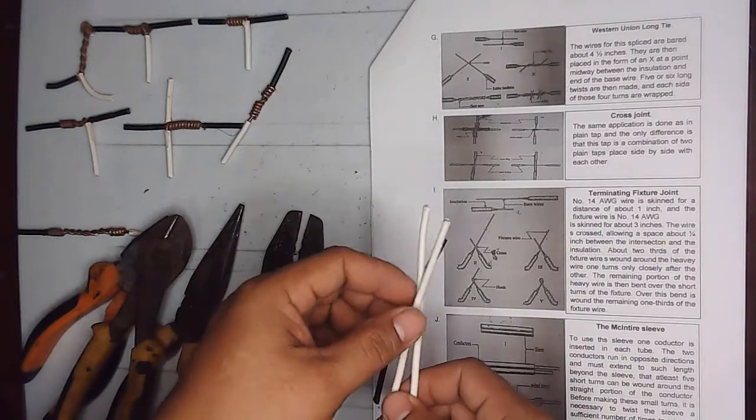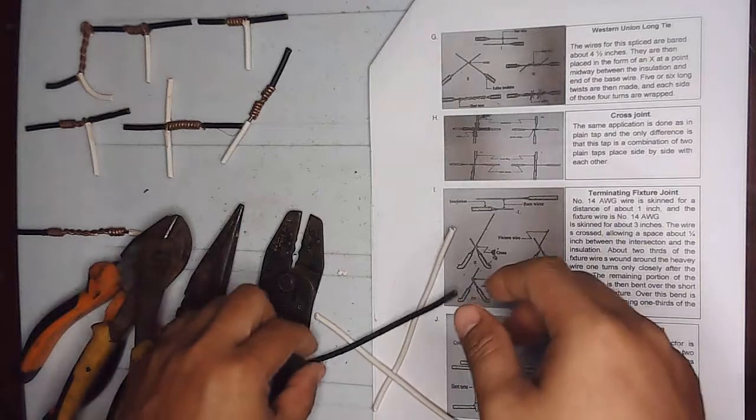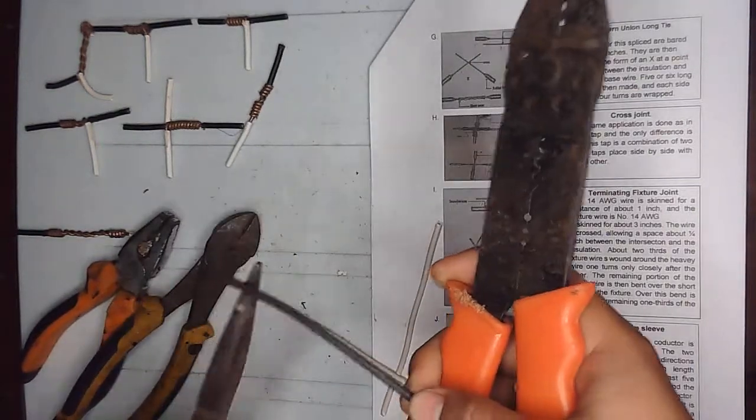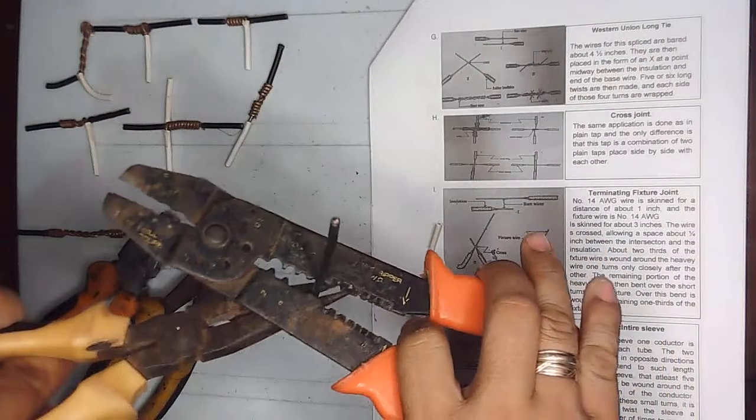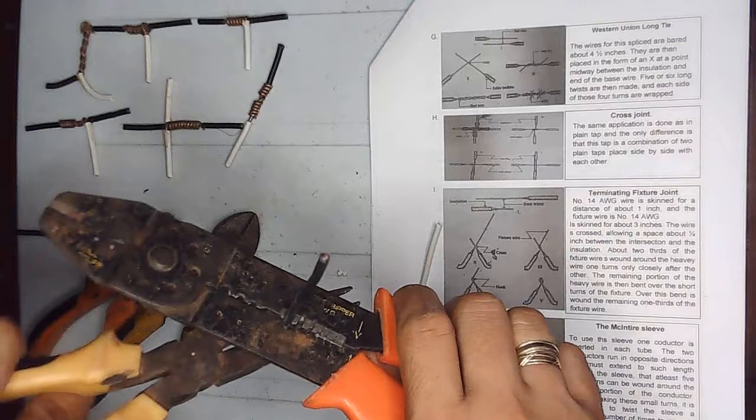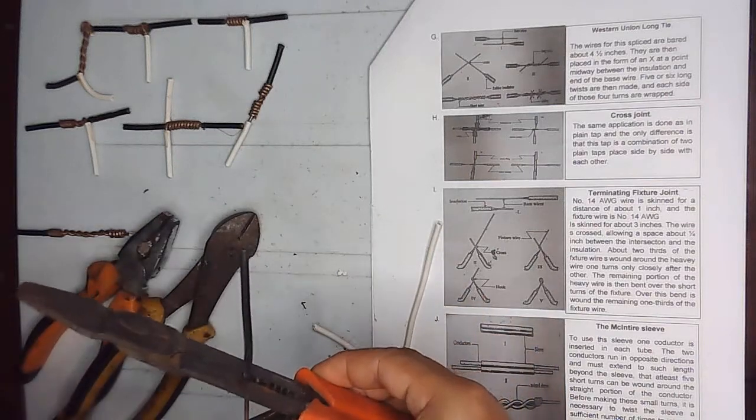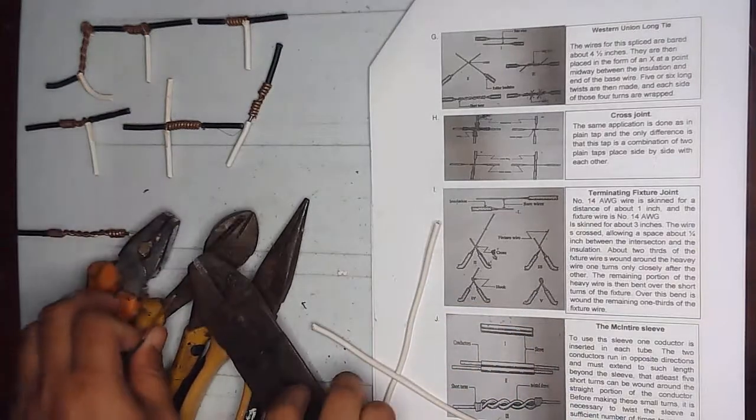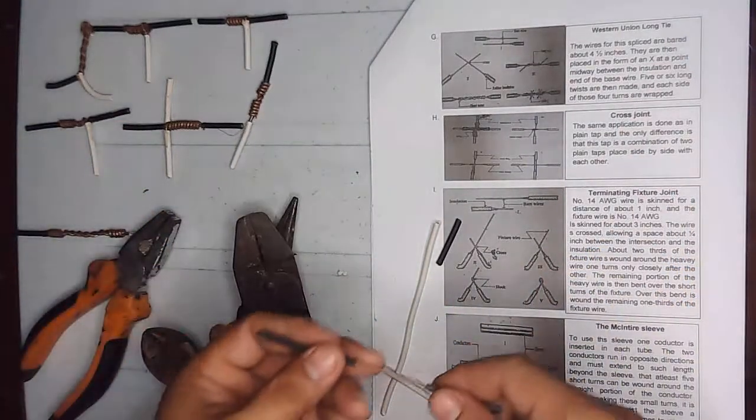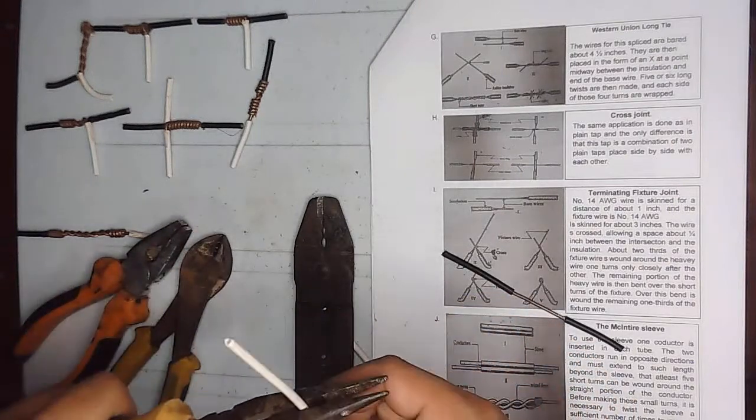The main wire will be stripped at the center. Using the long nose pliers and wire stripper, we will strip here. The wires will be stripped about three inches.